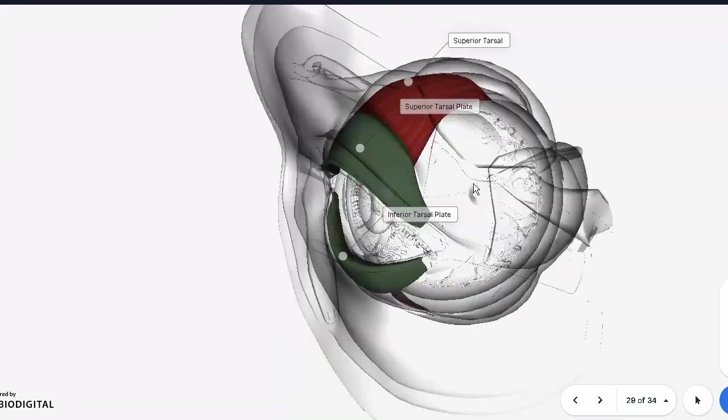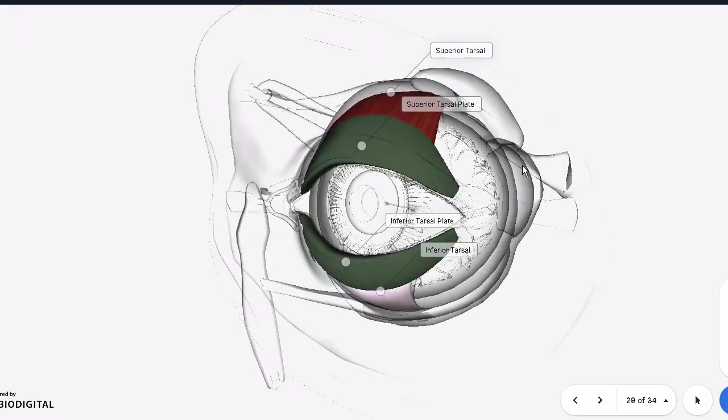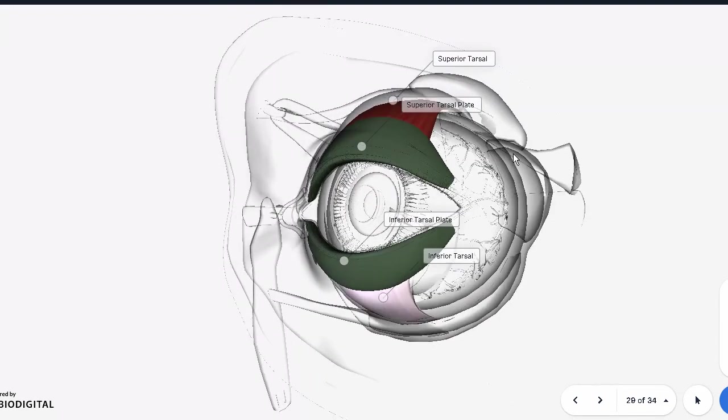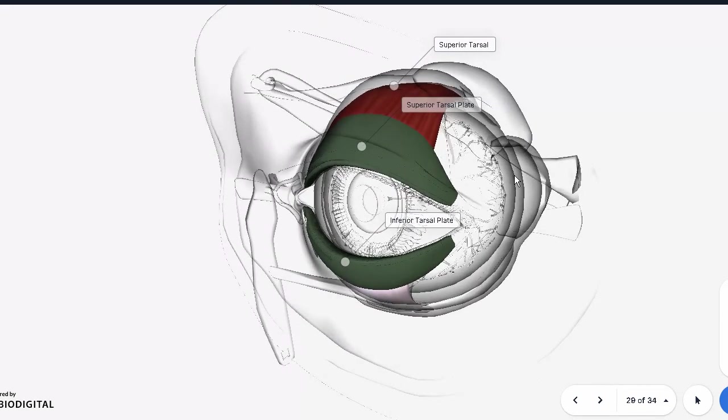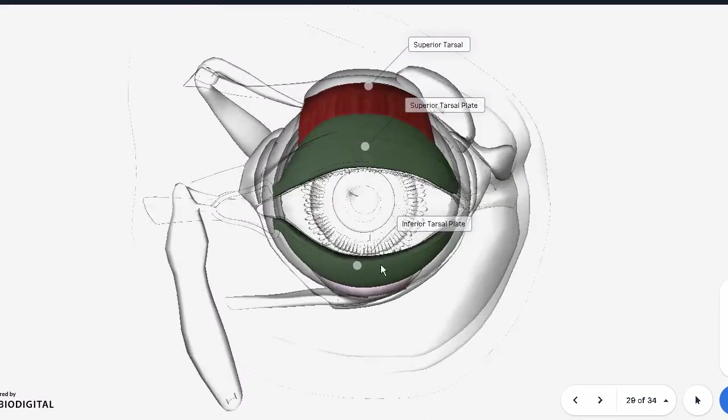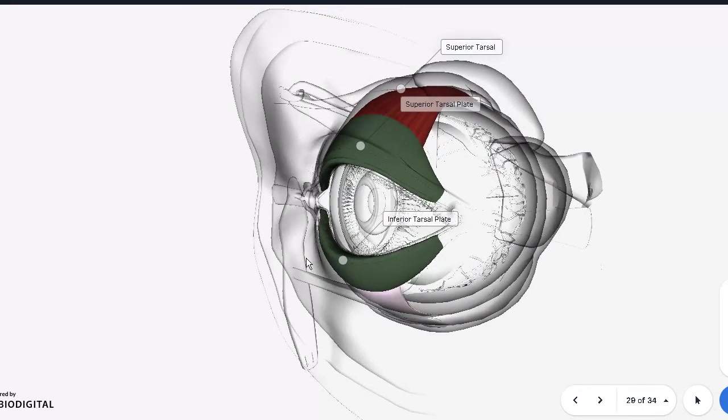Tarsal plates, once again, are basically fibrous septa which are giving support to the eyelid. And they're found right in front of the muscle but within the skin. The meibomian glands are located onto them. They're made of fibrous connective tissue, give shape to the eyelids, and are also protective.